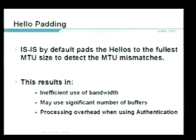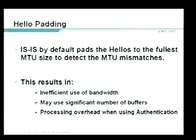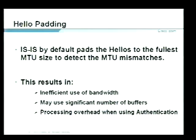On newer deployments with POS interfaces and GigE interfaces with larger MTU sizes, and with authentication turned on, service providers said padding every packet is inefficient — it wastes bandwidth, uses significant buffers, and when authentication is on, the router computes authentication over the entire packet length, burning extra CPU cycles. You can turn padding on or off globally, on multipoint or point-to-point interface basis, or per individual interface.